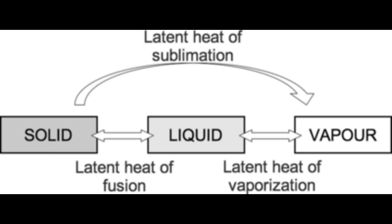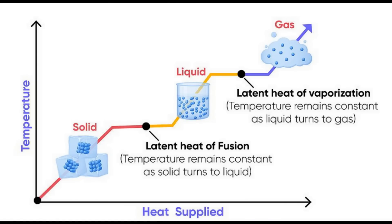Phase change materials use something called latent heat, and this is the key to them. Latent heat is to do with the change of phase without a significant rise in temperature. The temperature doesn't change much, but the material can change from a solid to a liquid and take in energy — and that energy is called the latent heat.